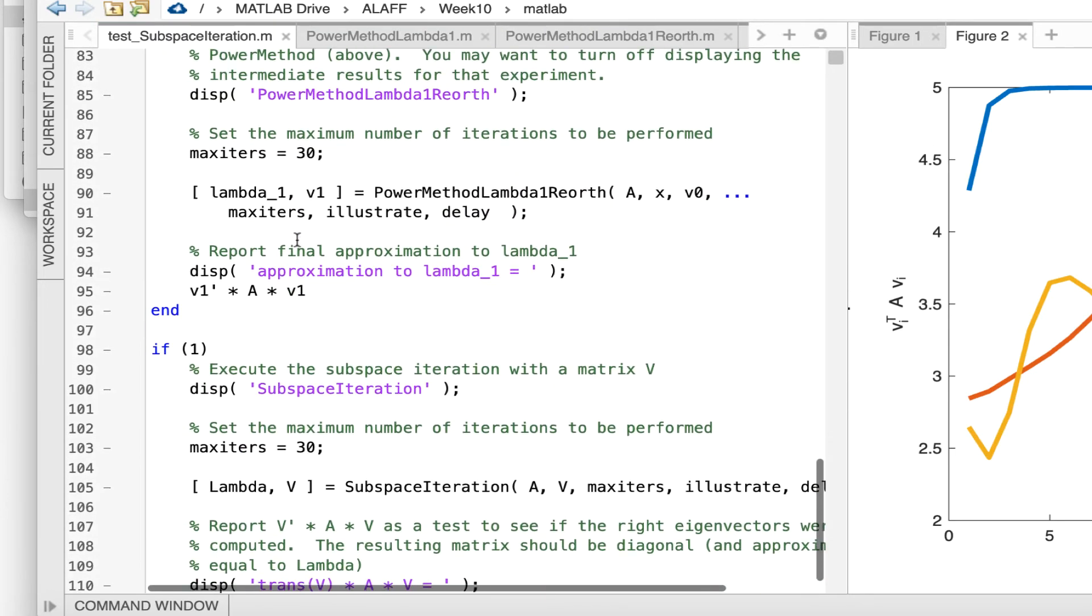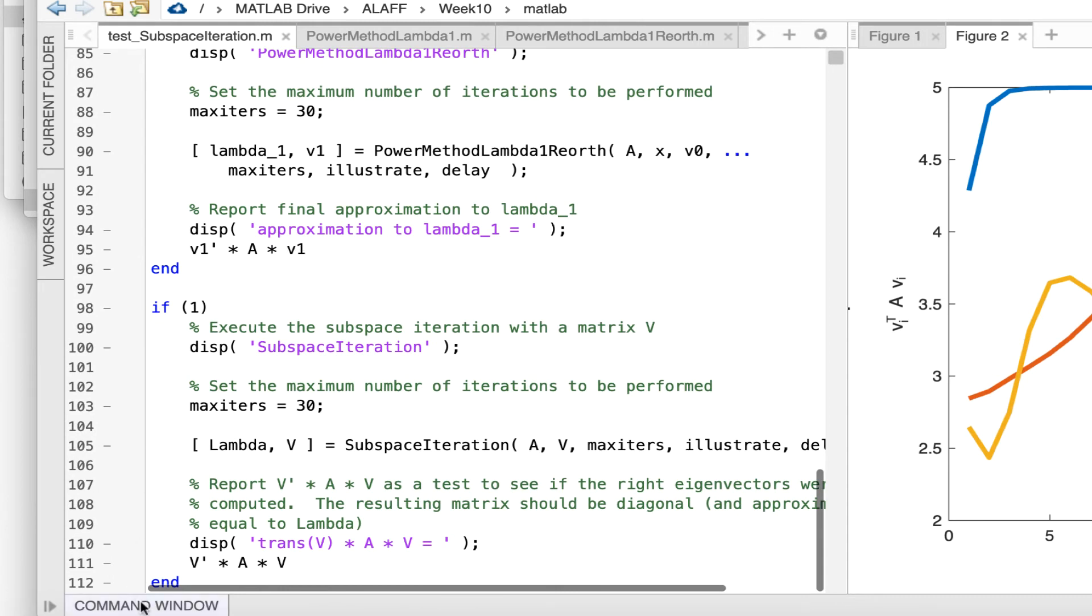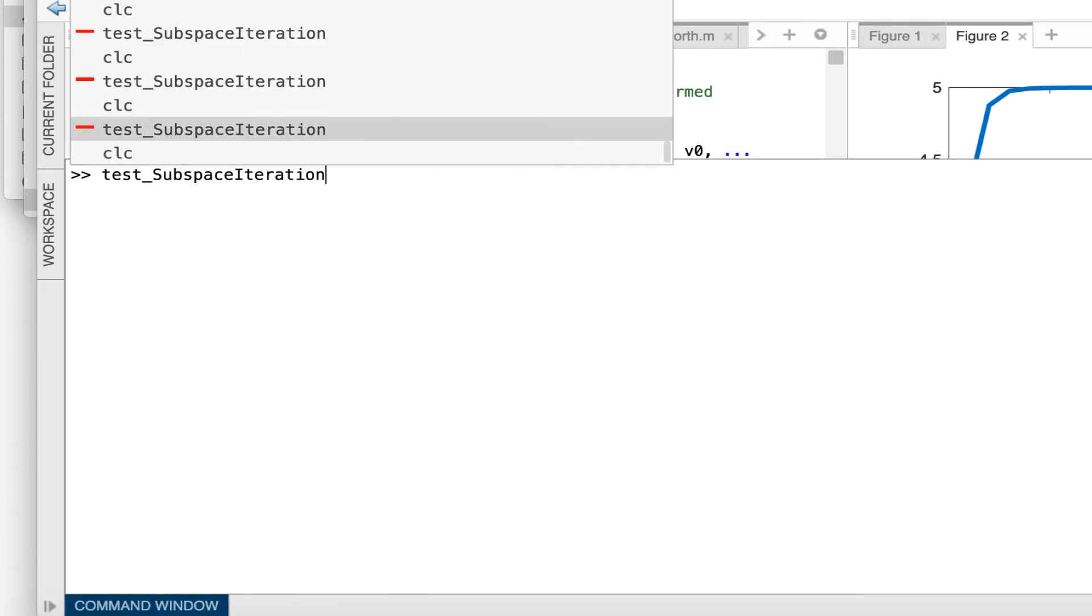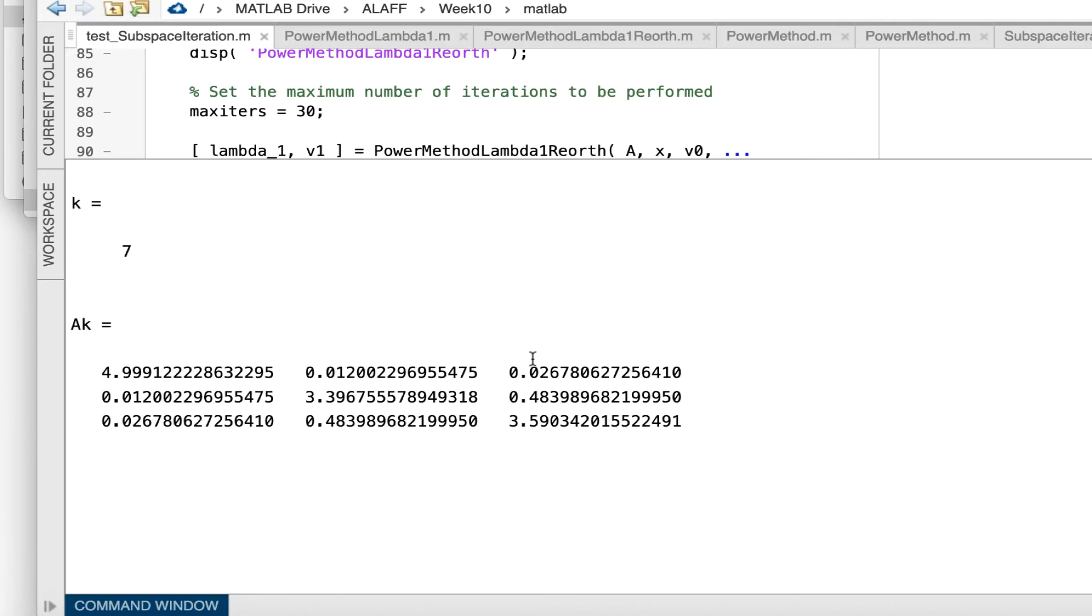And then I've made the obvious changes to my test driver so that if I go to the command window and I execute test subspace iteration, then I start seeing this matrix AK slowly but steadily becoming a diagonal matrix where we can find the eigenvalues on the diagonal.